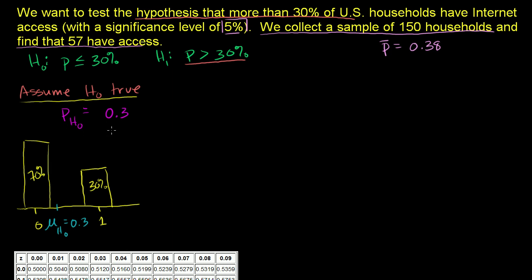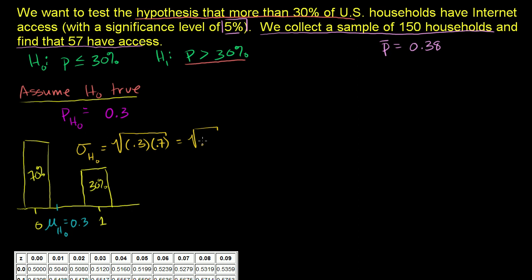The population standard deviation assuming our null hypothesis — we've seen this when we first learned about Bernoulli distributions — is going to be the square root of the proportion with internet access times the proportion without: √(0.3 × 0.7), which is the square root of 0.21.